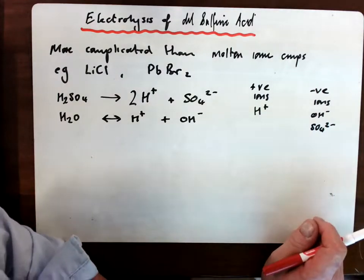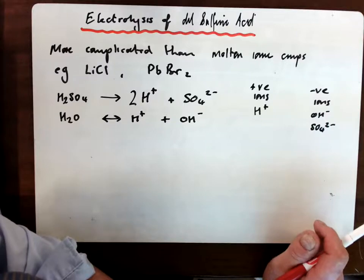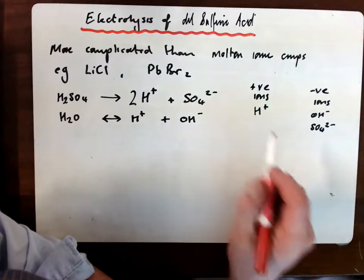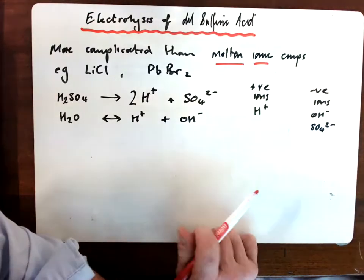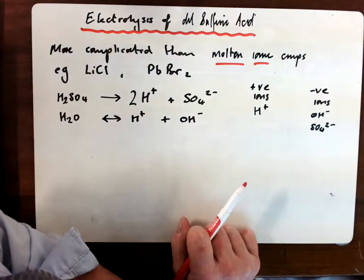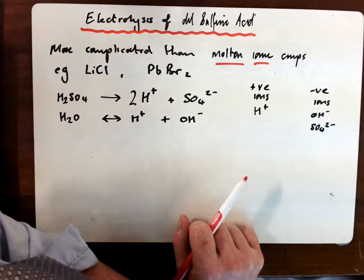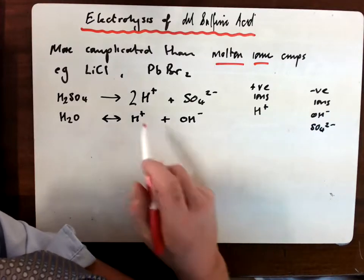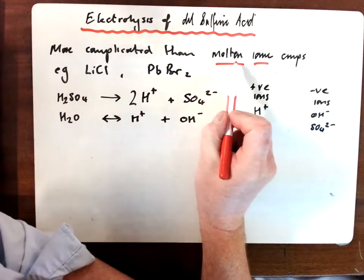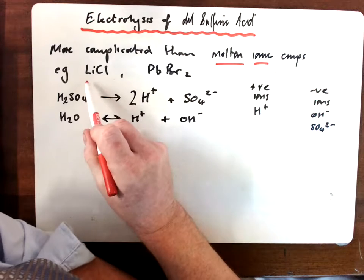Up until now, in another video that we looked at, you had carried out electrolysis of what we call molten ionic compounds. And predicting the products of those and the half equations and the observations at the anode and cathode was relatively straightforward. For example, if it was lithium chloride, which was the molten ionic compound, you simply got lithium and chlorine.